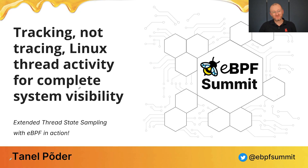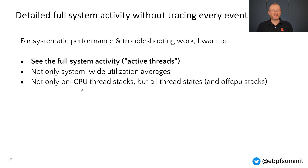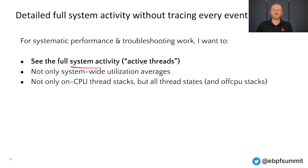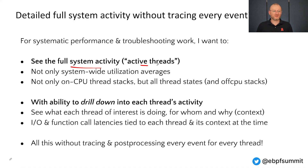Hi, my name is Tanel Puter. Let's talk about Linux thread state tracking, not tracing. Every system provides utilization metrics, which is like the supply side, but I also want to see the full system activity from the demand side. The demand is basically active threads doing stuff for you. And I want to be able to drill down into individual threads, like a log writer in a database. So can we do all of this without having to trace everything all the time?